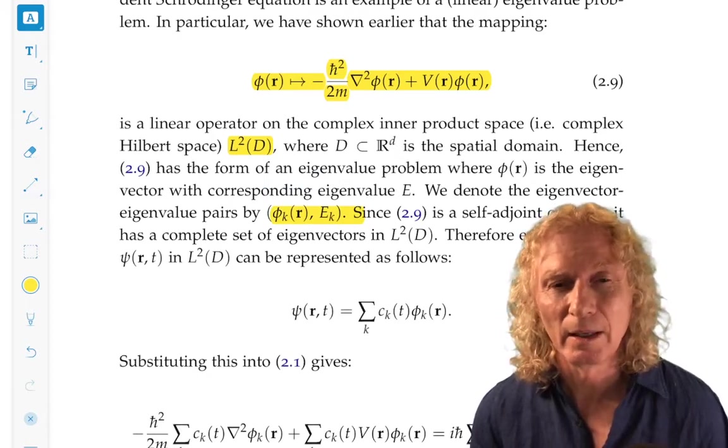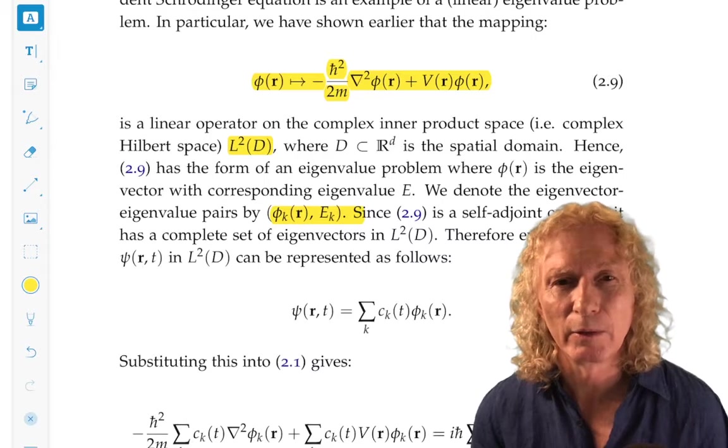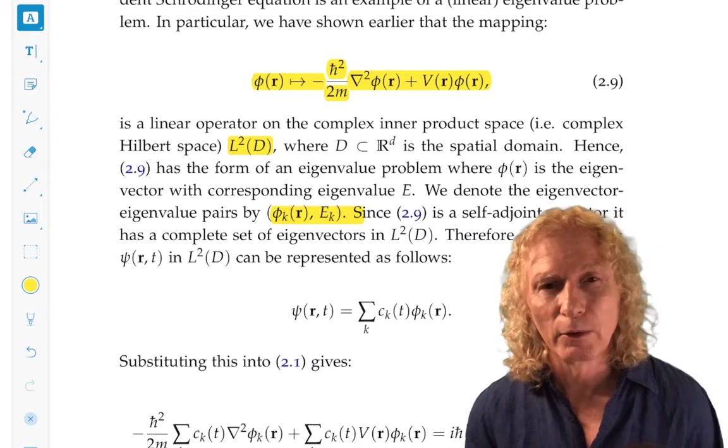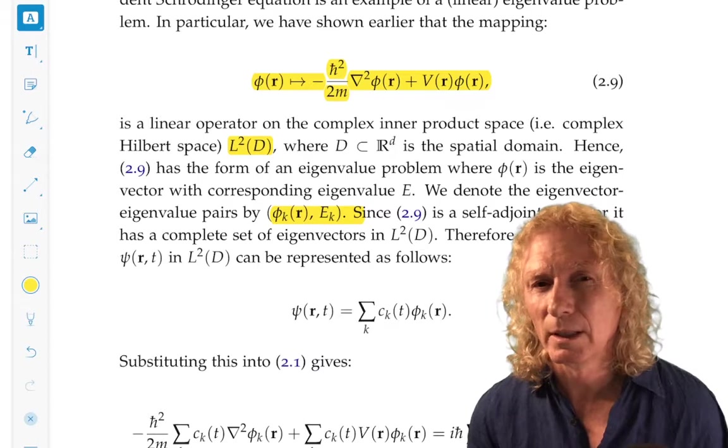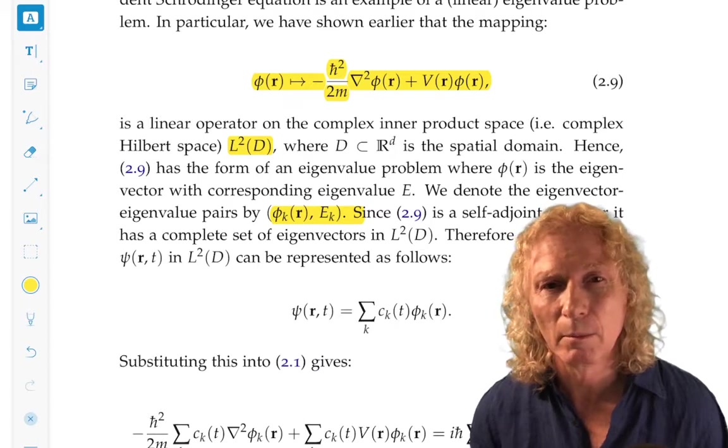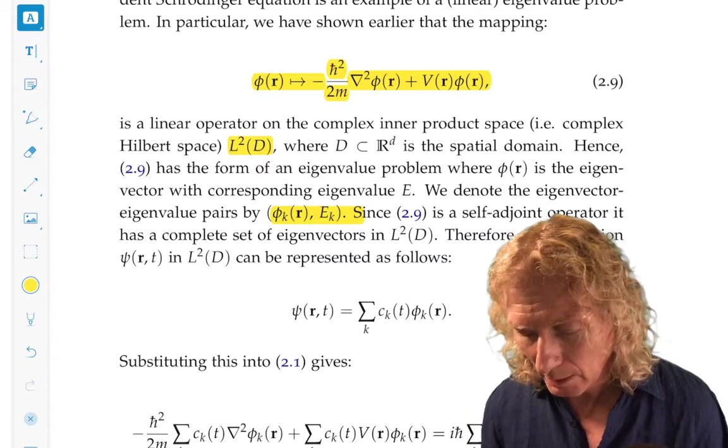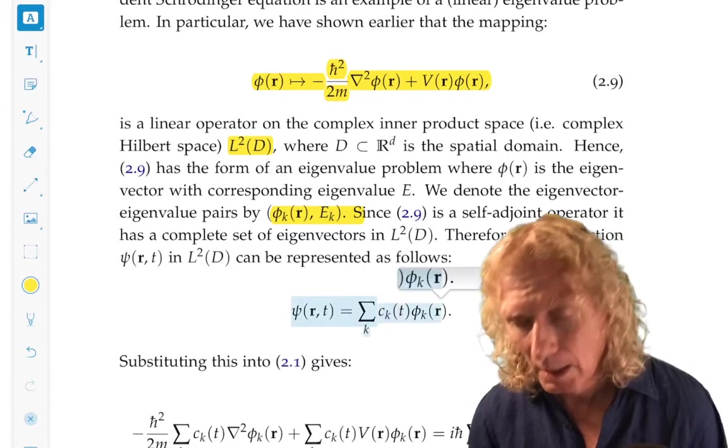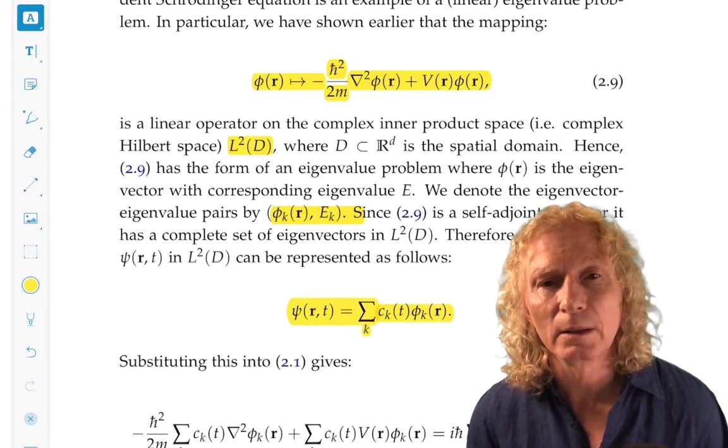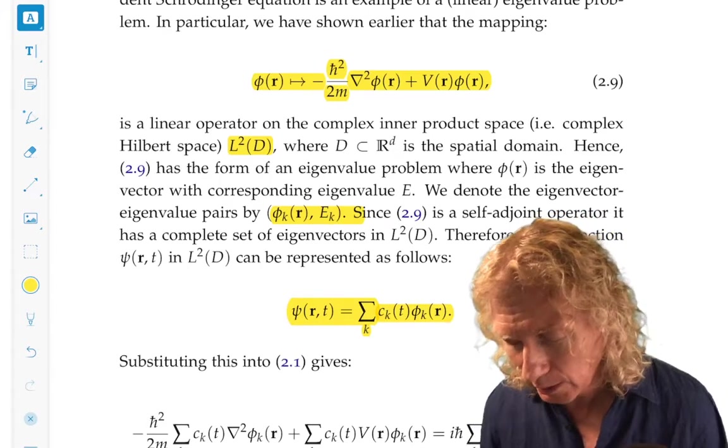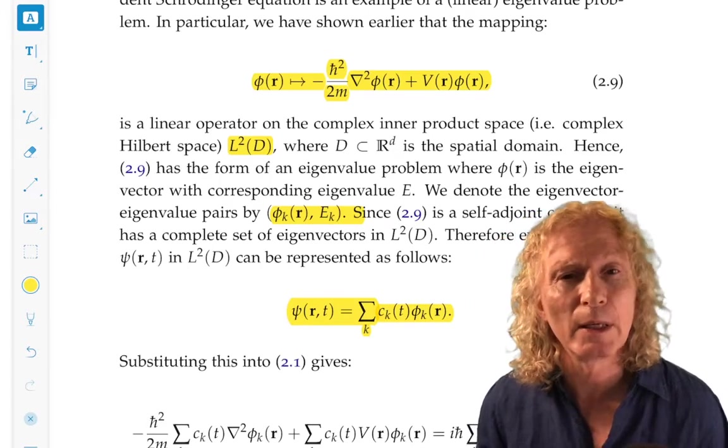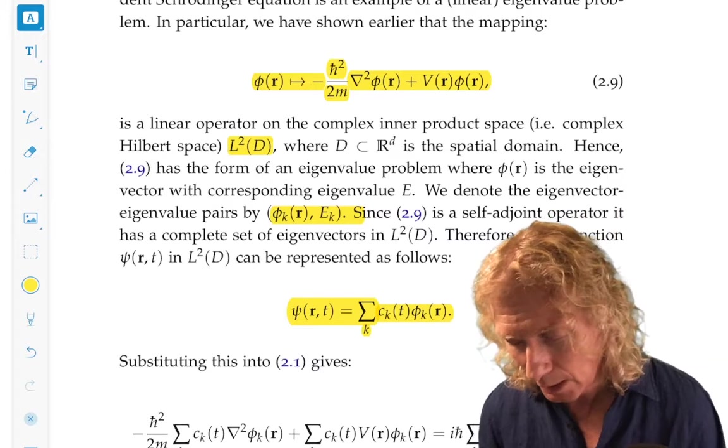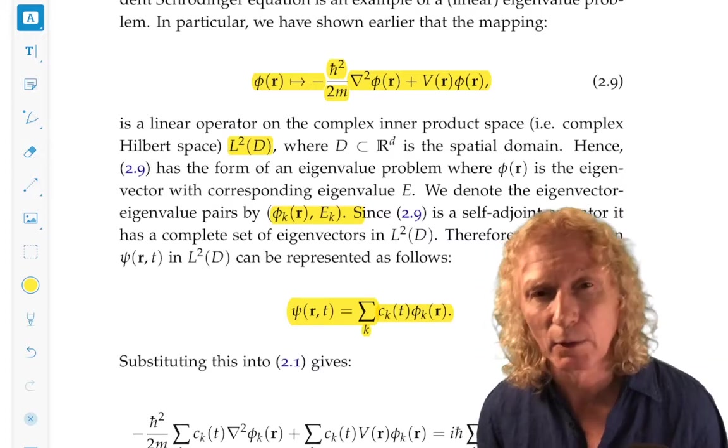Now, the index k is indicative of something discrete. We are going to take it as discrete now. We'll examine that a bit later on, but the general wave function can be represented as a linear combination of the eigenfunctions of the time-independent Schrödinger equation, where the coefficients cₖ(t) depend upon time.